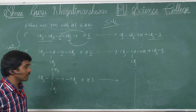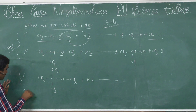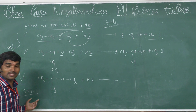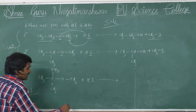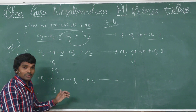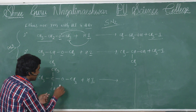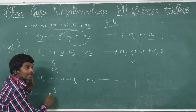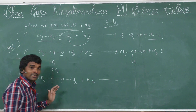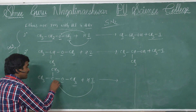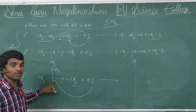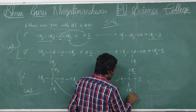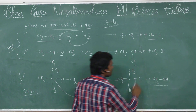In tertiary condition, the reaction follows SN1 mechanism — remember this is very very important. So for an unsymmetrical ether with a smaller alkyl group on the right of oxygen and a bigger tertiary group on the left, iodine wants to attach to the bigger alkyl group or tertiary alkyl group only. So formation of tertiary butyl iodide plus methanol.